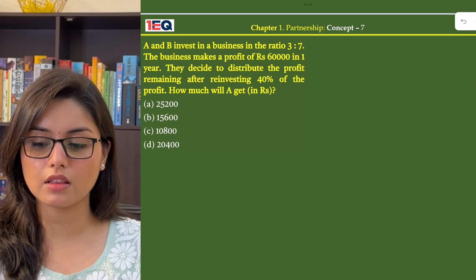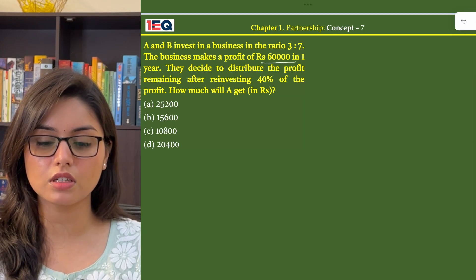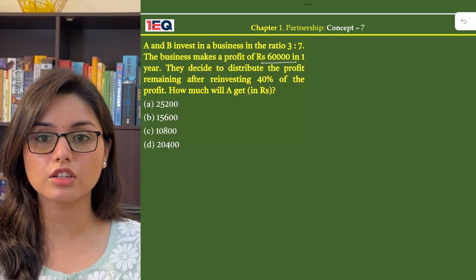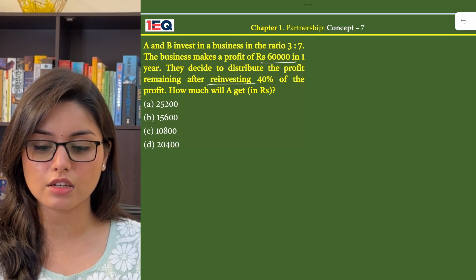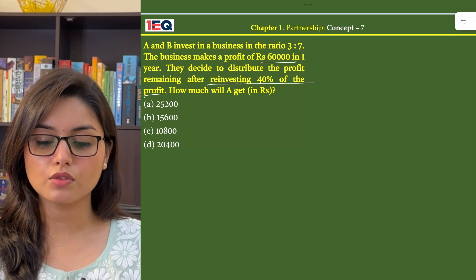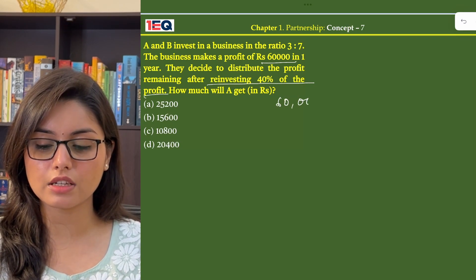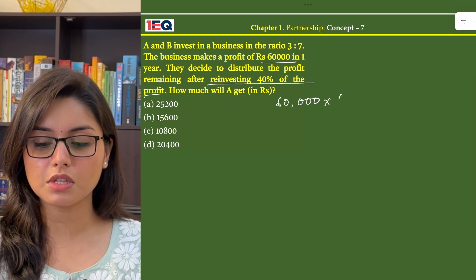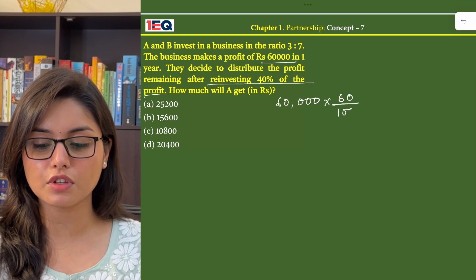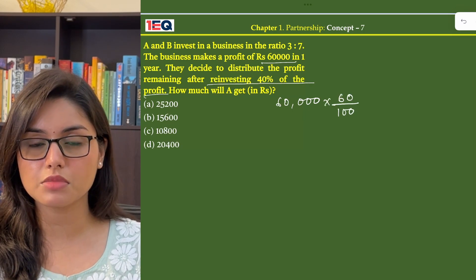So in this question, we know that there was a profit of 60,000 earned in a year and they decided to reinvest 40% of the profit. So if they are deciding to reinvest 40% of 60,000, that means they are left with 60% of it, which they can divide among themselves.